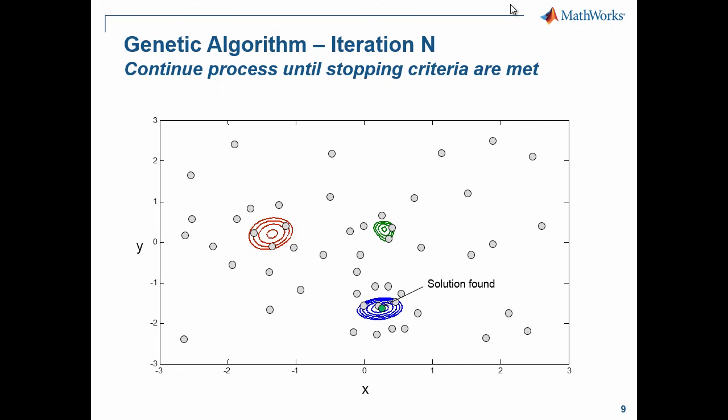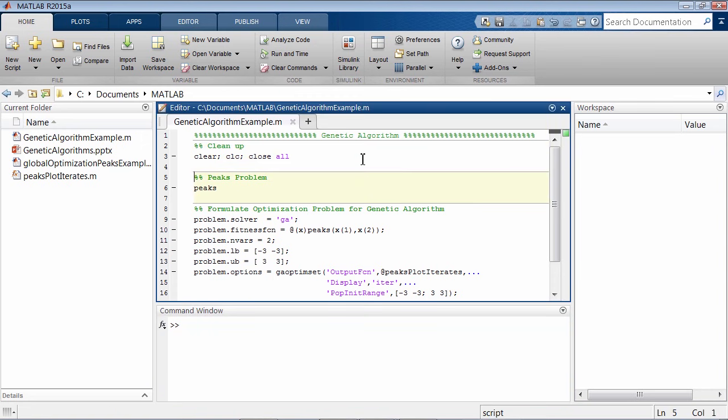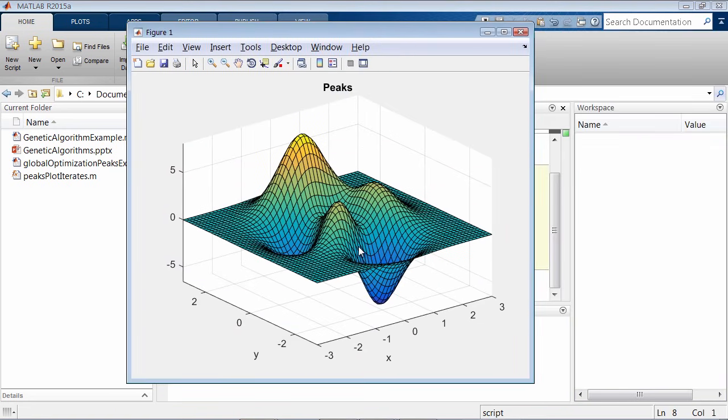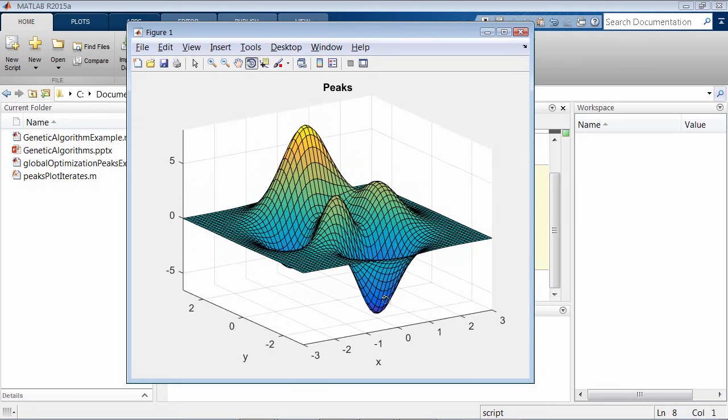Let's hop over into MATLAB and take a look at an example of a genetic algorithm on our peaks problem. The peaks problem is a problem that has a couple different local minima. It's actually the same function that we were looking at in the slides, and it has a global minima down here. So again, two local minima and one global minimum over here.